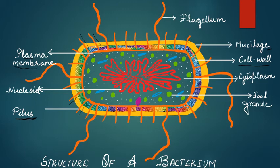Besides the small hair-like structures (pilus), there are also some long thread-like structures arising from the plasma membrane. These long thread-like structures are called flagellum (singular) or flagella (plural), and they help in locomotion — the movement of these bacterial cells.